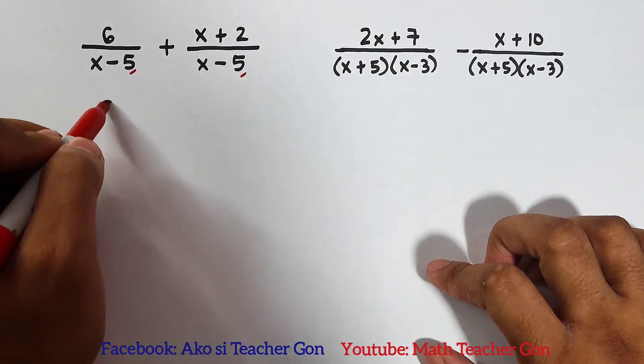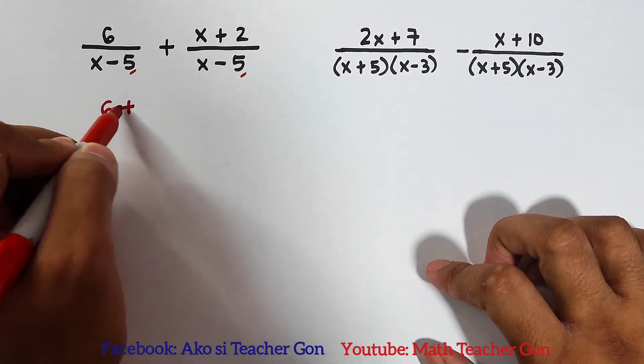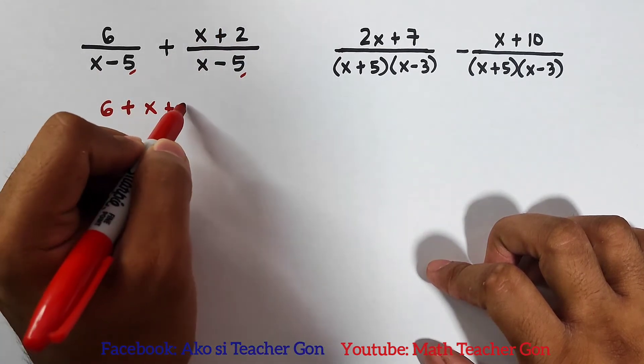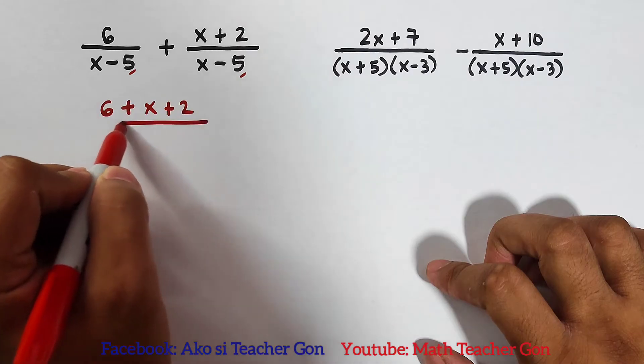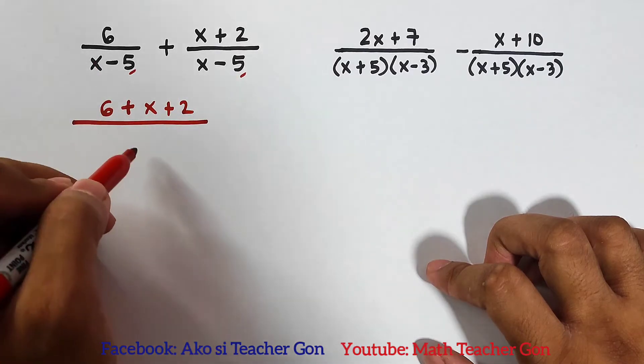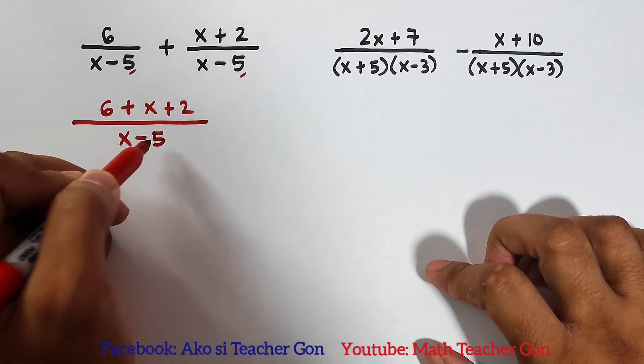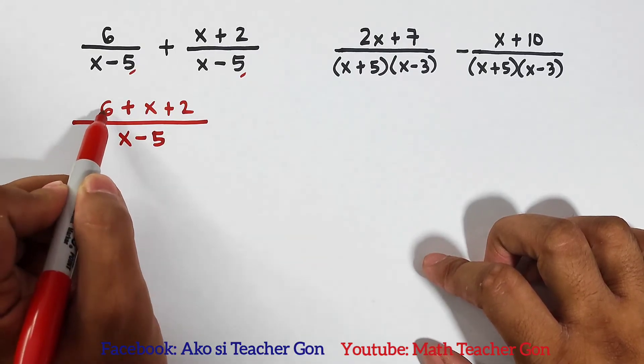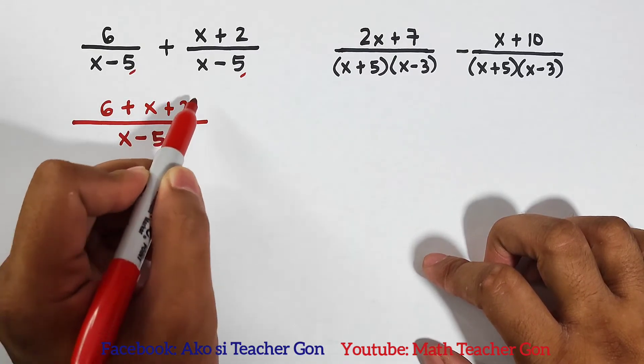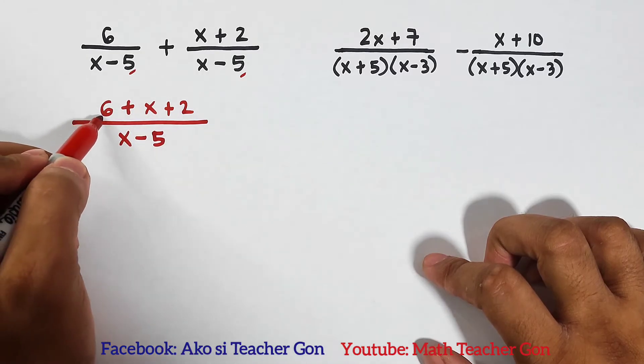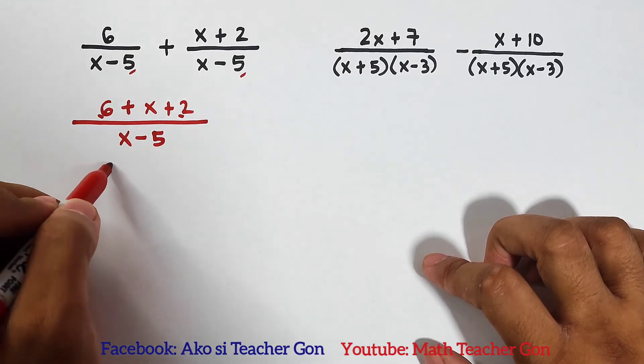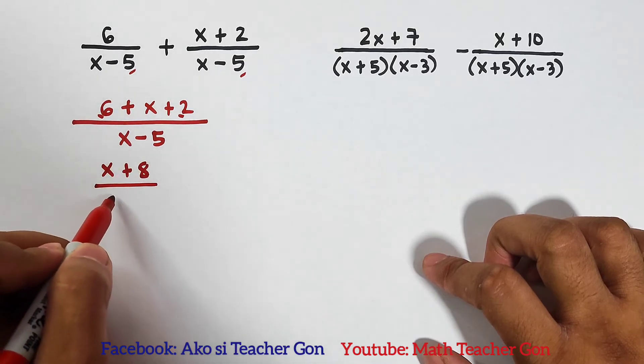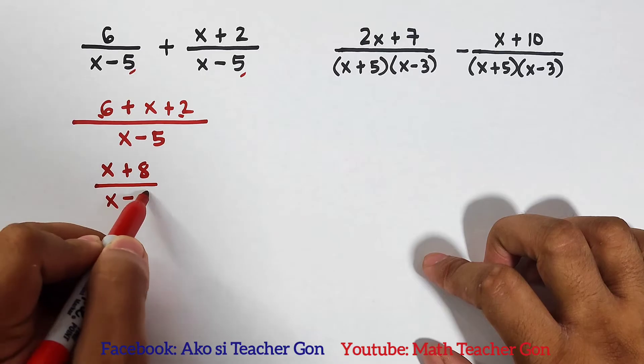Let's add the numerators. We have 6, then copy plus the expression or the next numerator x plus 2, over its common denominator which is simply x minus 5. Now you have your new numerator: 6 plus x plus 2. Combined like terms, we can combine 6 and 2, so this would be x plus 8 over x minus 5.